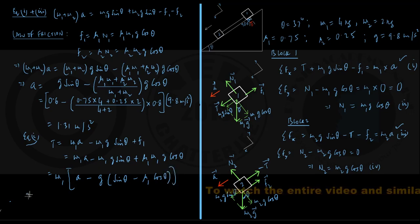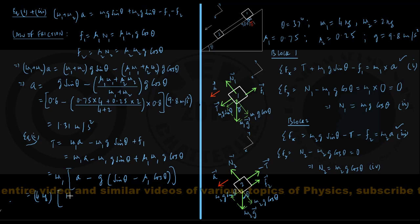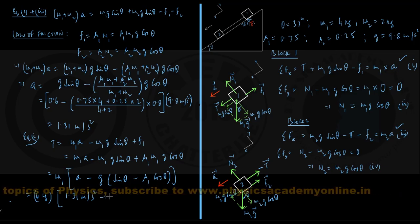Let us put the values now, m1 is given to be 4 kg. Entering the bracket, a has been just now found to be 1.31 m per second square minus g is 9.8 m per second square